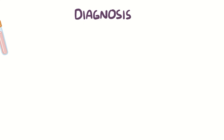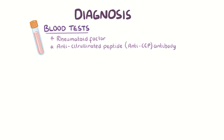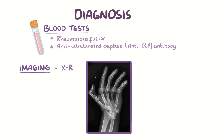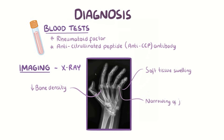Diagnosis of rheumatoid arthritis usually involves confirmatory blood tests, like looking for the presence of rheumatoid factor and anti-citrullinated peptide antibody. Additionally, imaging studies such as X-ray usually reveal decreased bone density around the affected joints, soft tissue swelling, narrowing of the joint space, and bony erosions.